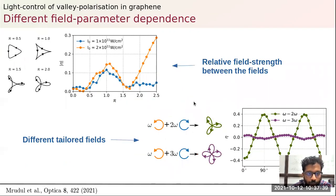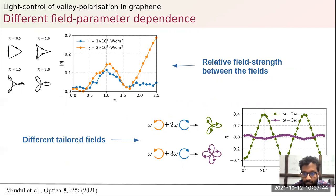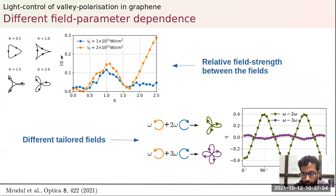The effect also depends on the shape of the field. As the relative field strength of the omega and two-omega fields is changed, when the field shape more closely resembles the energy landscape of the conductors near the valleys, it gives a higher valley polarization.